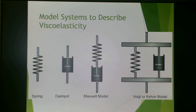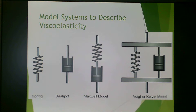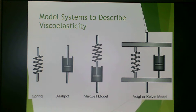We saw this in viscoelasticity part one, but to go over again: these are your model systems, your mechanical models to describe viscoelasticity. The first one is a spring, the second one is a dashpot. We touched on the Maxwell model in the first video, and we're going to talk about the Voigt or Kelvin model in this particular video.